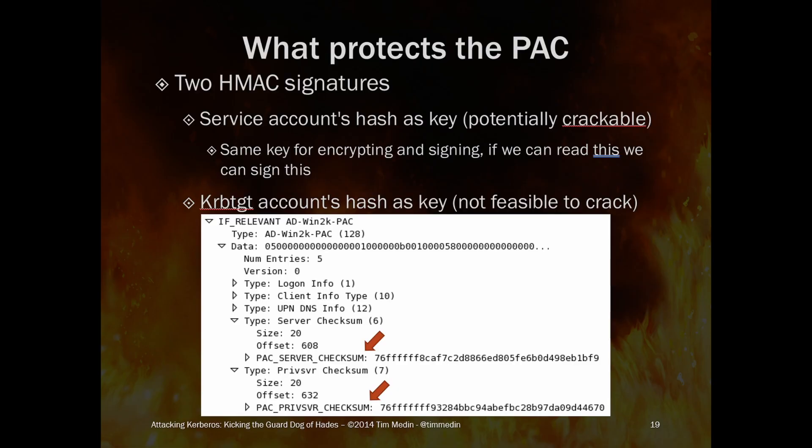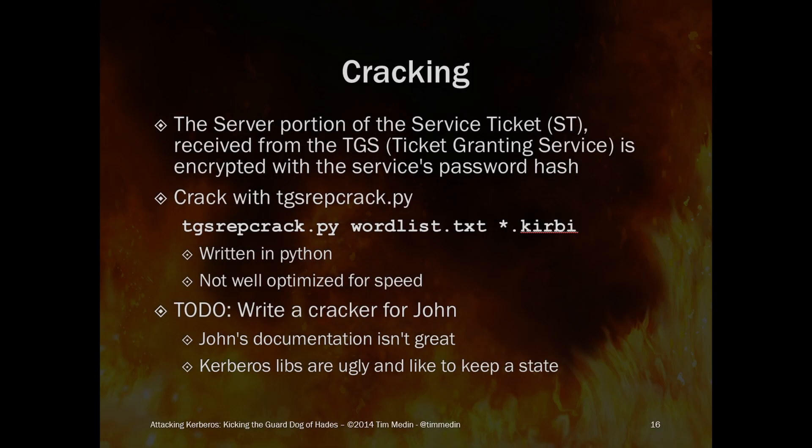I kept trying to figure out how to decode the pieces and find where the signature is — there are actually two signatures. I focused on the signature for the target service using the target service's password hash, and just kept plugging away at it. Finally got it working — ran around the house like a crazy person, super excited when the thing finally worked. Then I wrote a very terrible cracker: it would take a password guess, convert it to the NTLM hash, and attempt to decrypt the ticket. If it failed, it would guess, hash, and decrypt over and over again in my very poor Python.